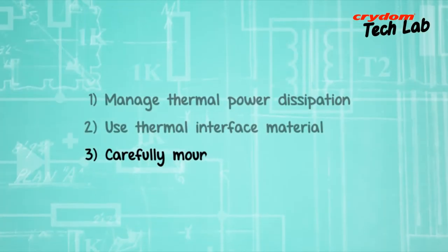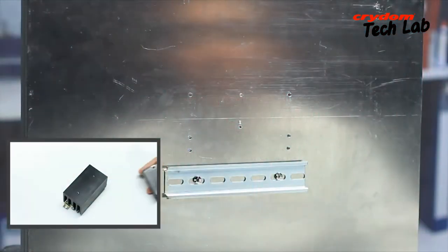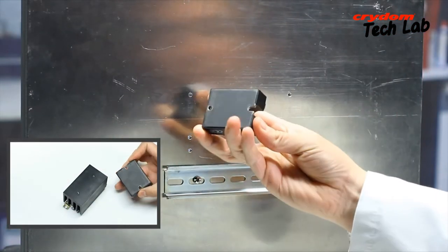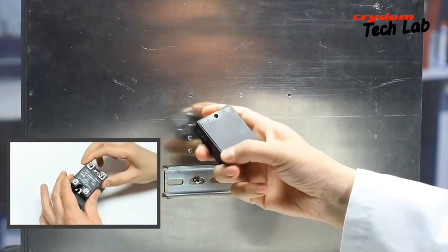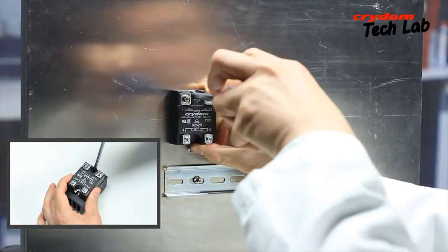Third and last is to carefully mount and wire the SSR. Place the SSR on the heat sink or panel, being careful not to bend the thermal pad. Install the mounting screws and begin tightening them to the specified torque.